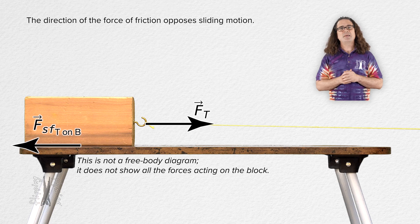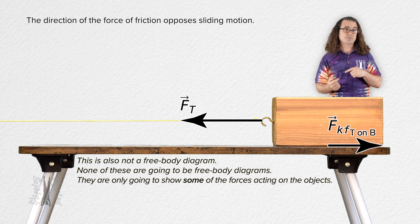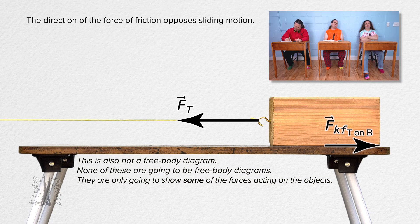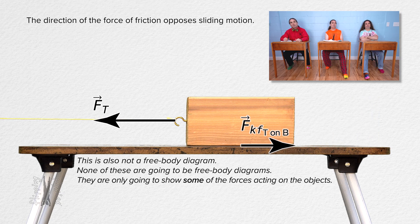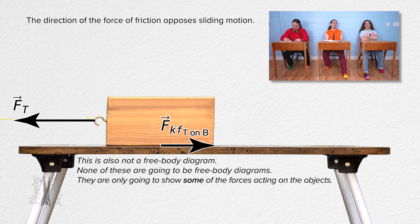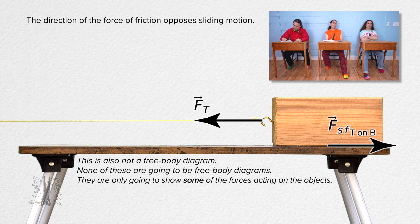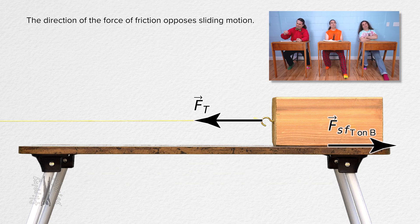The force of static friction opposes the sliding the block would do if the force of static friction were not there. Bobby, please explain all of that if the directions were reversed. If a block is sliding to the left, the force of kinetic friction from the table on the block is to the right. The force of kinetic friction opposes the sliding motion. And before the block slides to the left, there is still a force of tension pulling the block to the left. In other words, in the absence of a force of static friction, the block would slide to the left. Therefore, the force of static friction from the table on the block is to the right. The force of static friction opposes the sliding the block would do if the force of static friction were not there.